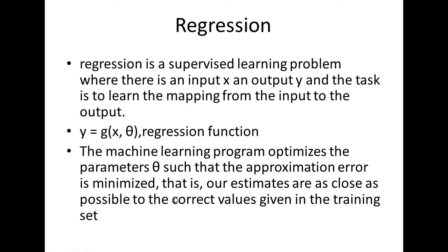The machine learning program optimizes the parameter theta such that the approximation error is minimized. If we choose theta such that the error is minimum, our estimates are as close as possible to the correct values given in the training set.